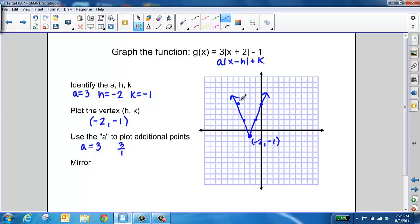And now we have the graph of the function g of x equals 3 absolute value of x plus 2 minus 1.